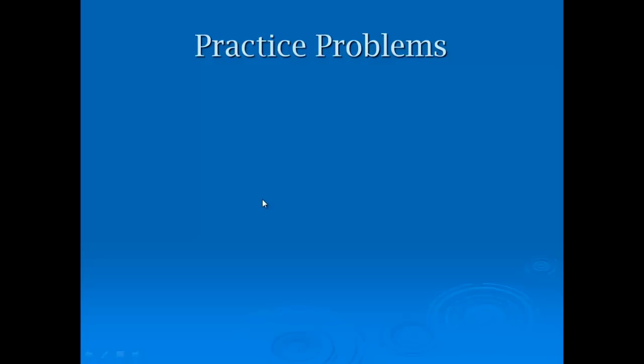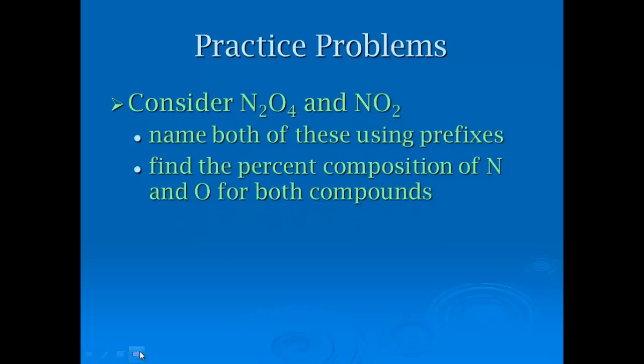We're going to do part two of 7B and talk about molecular and empirical formulas. I'm going to fall back on what we just did with percent composition. So if you look at two compounds, dinitrogen tetroxide and nitrogen dioxide, name both of these using prefixes and define the percent composition of nitrogen and oxygen for both.